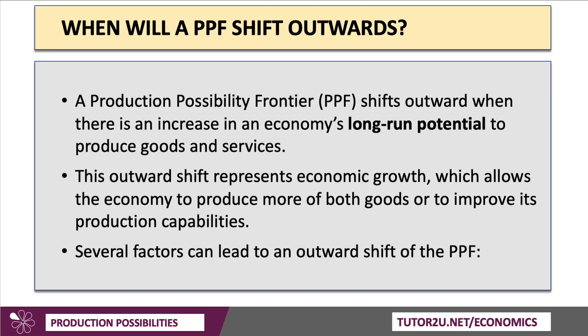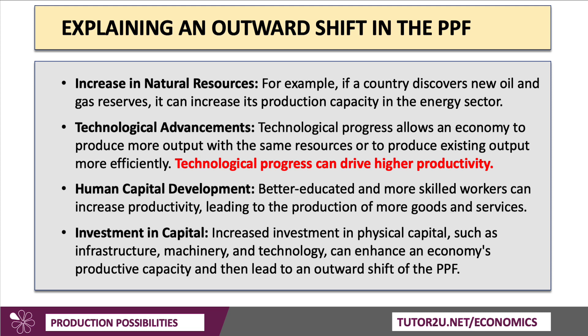When will the PPF shift outwards? It'll shift outwards when there is an increase in a country's long-run productive or supply potential, and this outward shift represents economic growth, because the economy can now produce more of both goods. What can cause a shift? First, more resources — our natural resource endowment could increase if a country discovers new oil or shale gas reserves, boosting production capacity in the energy sector. There could also be advances in the state of technology, allowing us to produce more with the same or fewer resources, as technological progress drives higher productivity.